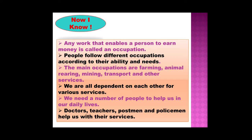Let's have a quick recap on the chapter. Any work that enables a person to earn money is called an occupation. People follow different occupations according to their ability and needs. The main occupations are farming, animal rearing, mining, transport and other services. We are all dependent on each other for various services. We need a number of people to help us in our daily lives — doctors, teachers, postmen and policemen help us with their services.